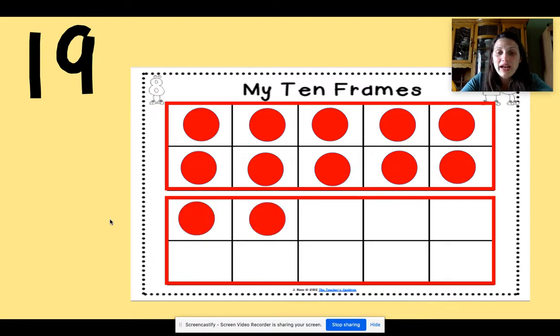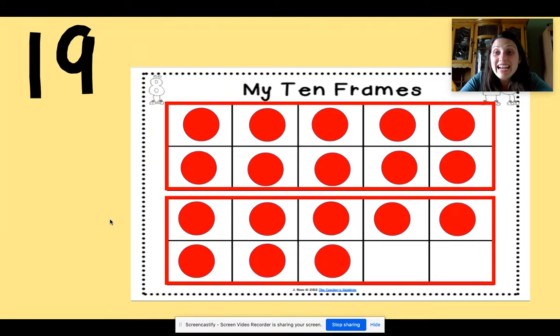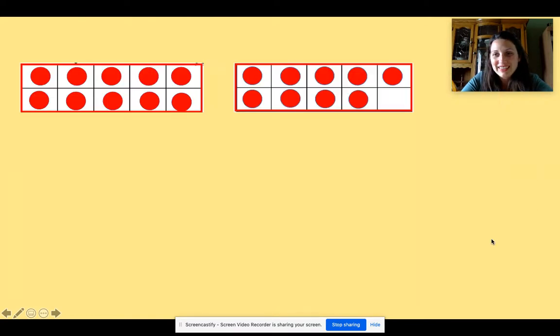Eleven, twelve, thirteen, fourteen, fifteen, sixteen, seventeen, eighteen, nineteen. And there I have 19 counters. I use one full tens frame and another tens frame that's not quite full. Let's see what that looks like. So here's my one full tens frame and another that's not quite full.